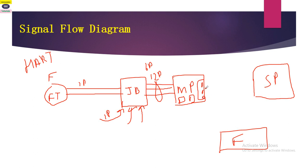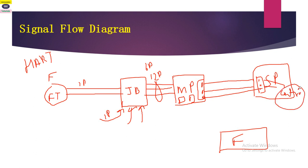This board is directly connected to the IO card installed in the system panel. The IO card is connected to the controller through buses or other connections. The controller takes actions based on the logics configured in it to actuate the final control element. So the signal flows from field → junction box → marshaling panel → system panel, where the controller gives the command to actuate the control valve or final control element.